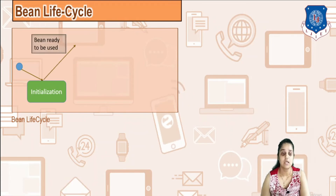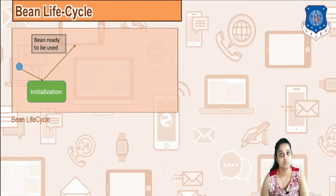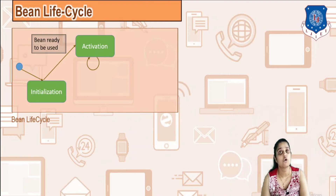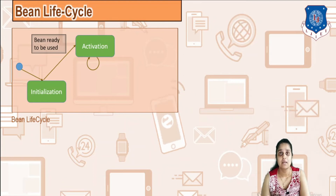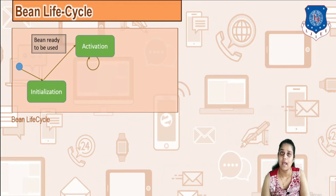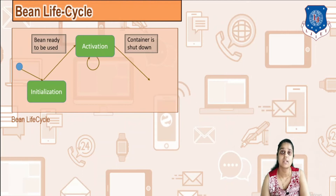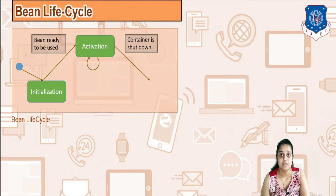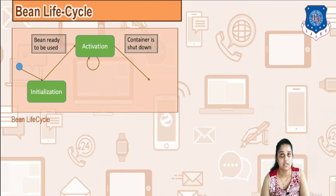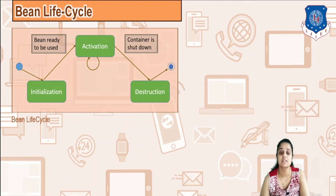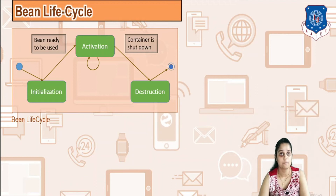When the object of the bean is created, the bean is ready to be used and it enters the activation phase. It can be called once, more than once, or as many times as needed. When the container is shut down — the context is nothing but a container of your Spring — it enters the destruction phase, and finally its life cycle is over.